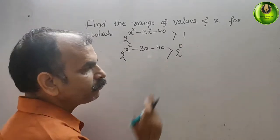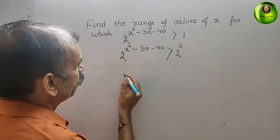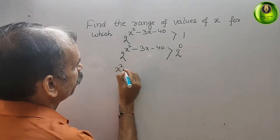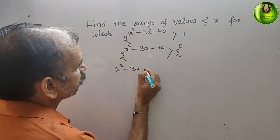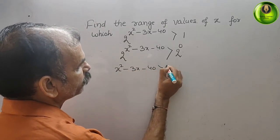Now the base are the same. Now we will get what? x square minus 3x minus 40 is greater than 0.